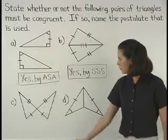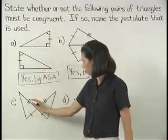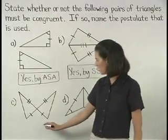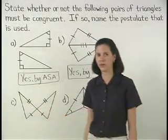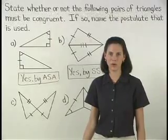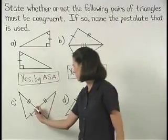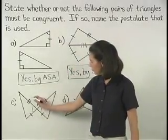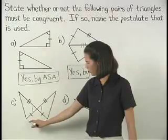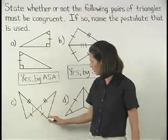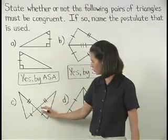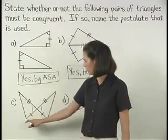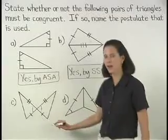In Part C, we only have two pairs of corresponding sides that are marked as congruent. But notice that we have a pair of vertical angles in the diagram, and we know that vertical angles are congruent. Since we now have two sides and the included angle of one triangle congruent to two sides and the included angle of a second triangle, we can say that these triangles are congruent by side-angle-side.